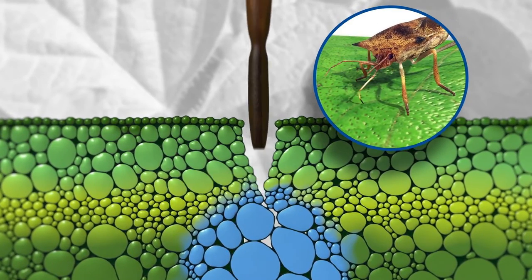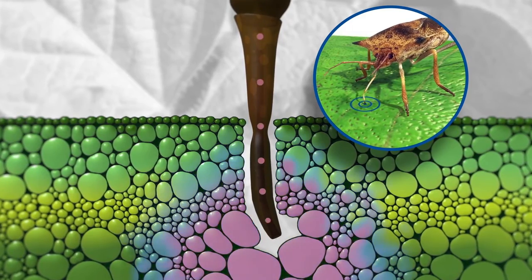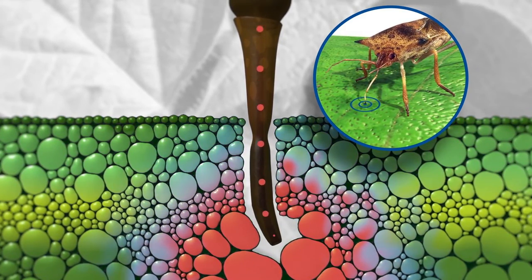Stink bug nymphs and adults primarily attack the pods and seeds of soybean plants using their piercing and sucking mouth parts.